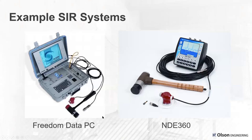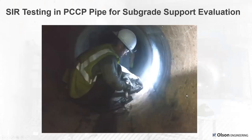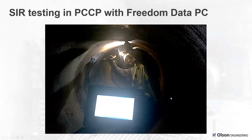We use two systems: the Freedom Data PC with the Wilcoxon velocity transducer — which we put a base plate on — and the geophone for flat slabs. We use the Wilcoxon velocity transducer for testing tunnels and pipes because we're testing at all angles and directions, including upside down and sideways. It can also be done with our NDE 360, which is more portable and battery powered, so one person can easily operate both the testing and data collection — helpful in tunnel linings.